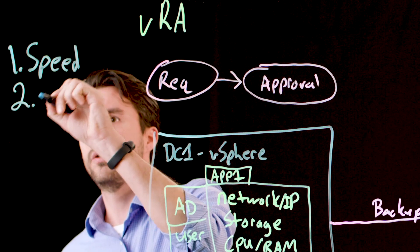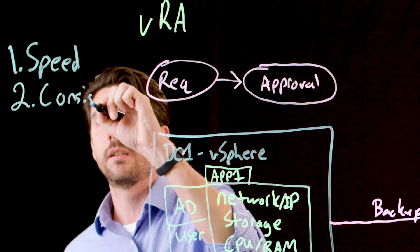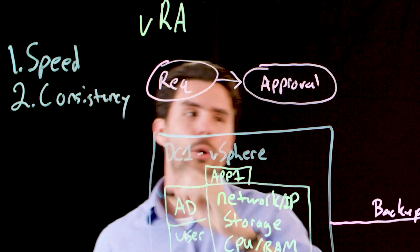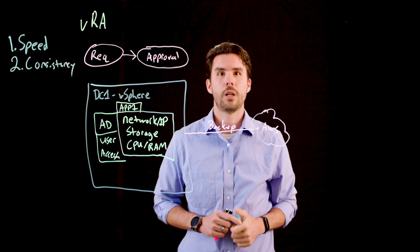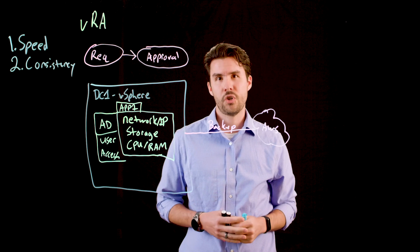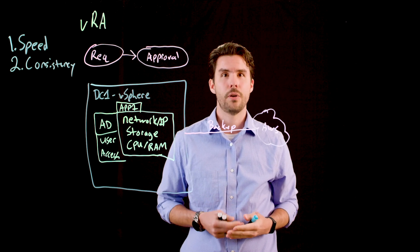The second thing VRA can do is bring consistency. Any manual process is going to be prone to error, whether it's a typo or maybe someone not following procedure. When you automate provisioning with VRA, you can expect the same results every time.